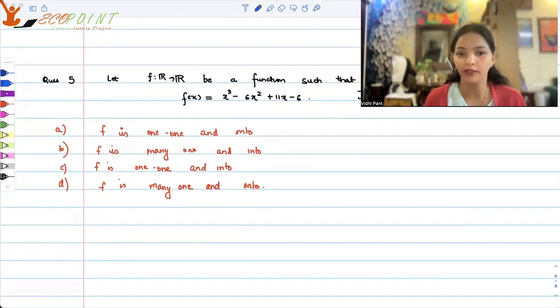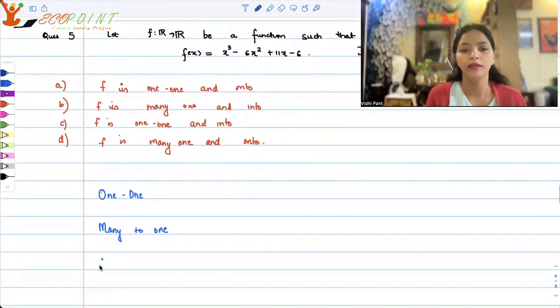What we need to recall here is: what do we mean by 1 to 1? What do we mean by many to 1? What do we mean by an onto function? And what we mean by an into function?